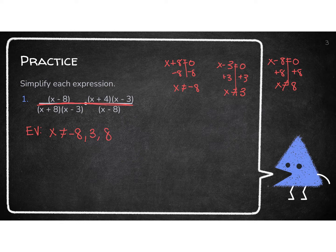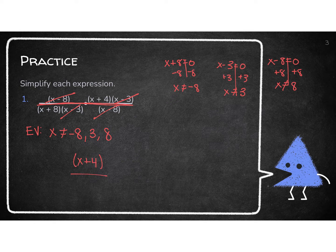Now we have to cross things off. Whatever is on top, I can cross off with the things on the bottom, as long as what's inside the parentheses are exactly the same. I have X minus 8 on top — I can cross it off with X minus 8 on the bottom. I have X minus 3 on top — I can cross it off with X minus 3 on the bottom. I'm left with X plus 4 on top and X plus 8 on the bottom. Those two things are my answer.